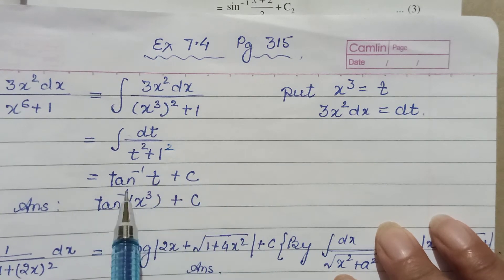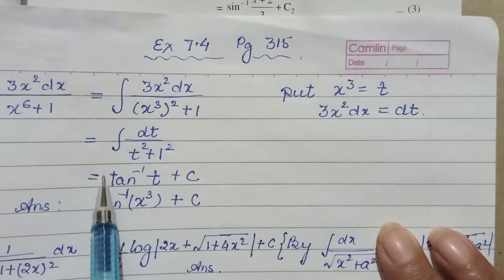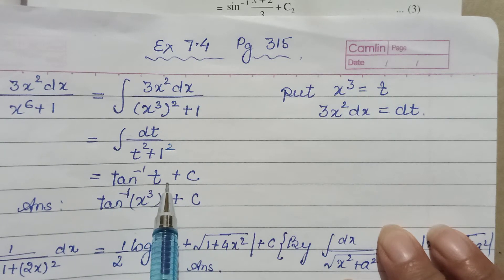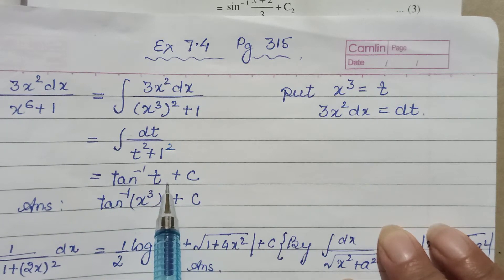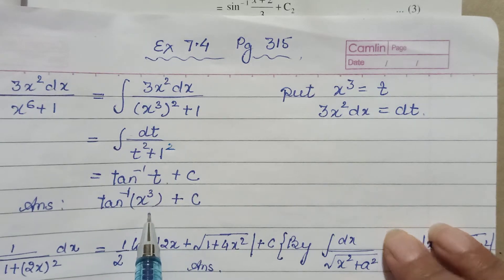Here a is 1, so this becomes tan⁻¹(t). Put back the value of t because our question was in x - we need to answer in terms of x. So tan⁻¹(x³) + C is the answer.